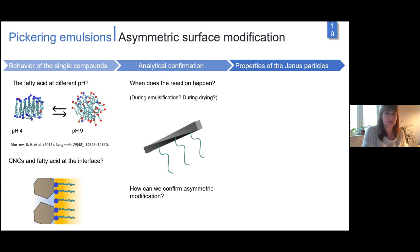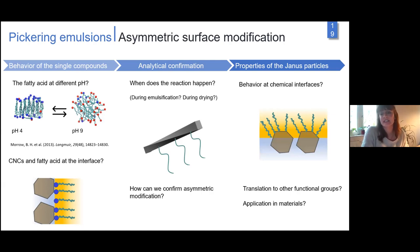We need to understand when this reaction happens. Is it really in the emulsion, during emulsification with ultrasound at very high local temperatures, or maybe during drying? During drying we remove water, and if we had absorbed acid on the CNC surface, maybe reaction happens then. How can we confirm this asymmetric modification? When we modify the surface, we cannot solely use NMR because it only shows the presence of groups.